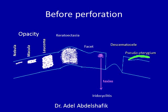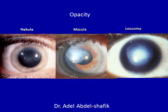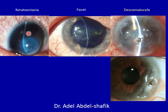Lastly, before perforation we can get pseudopterygium, which will be explained shortly. Different grades of opacity range from faint — where we can see through — to very dense — where we cannot see through. Keratectasia is visible as a bulging of the corneal curvature, or a bulging depression at the bottom of the ulcer where the curvature should be normal but this area is protruding.